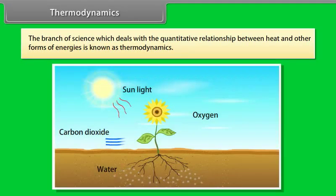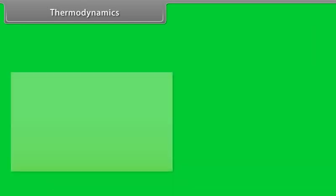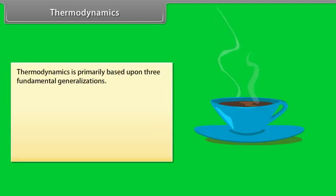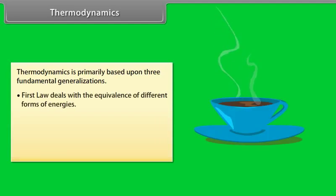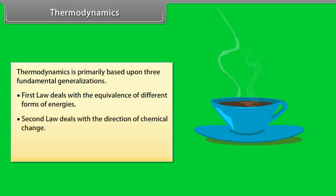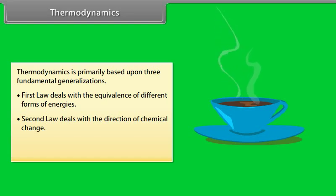Thermodynamics: The branch of science which deals with the quantitative relationship between heat and other forms of energies is known as thermodynamics. It is primarily based upon three fundamental generalizations. The first law deals with the equivalence of different forms of energies. The second law deals with the direction of chemical change. The third law helps to evaluate thermodynamic parameters like entropy.